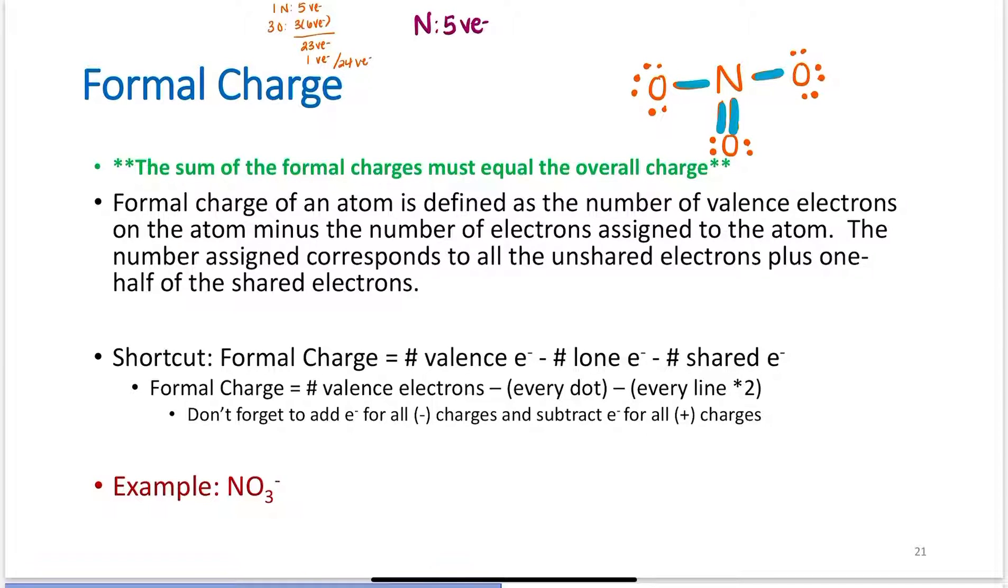Nitrogen has 5 valence electrons. The way I think about this is: How many bonds does nitrogen have? 1, 2, 3, and 4. I subtract 4. That gives me plus 1. The formal charge of the nitrogen here is plus 1. So, the number of valence electrons minus 1 for every bond gives me plus 1.